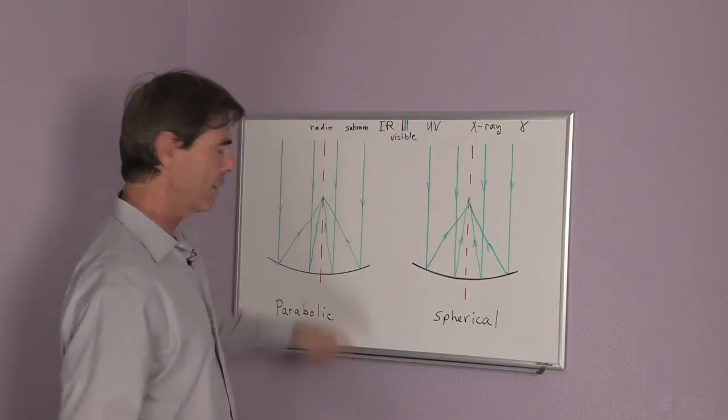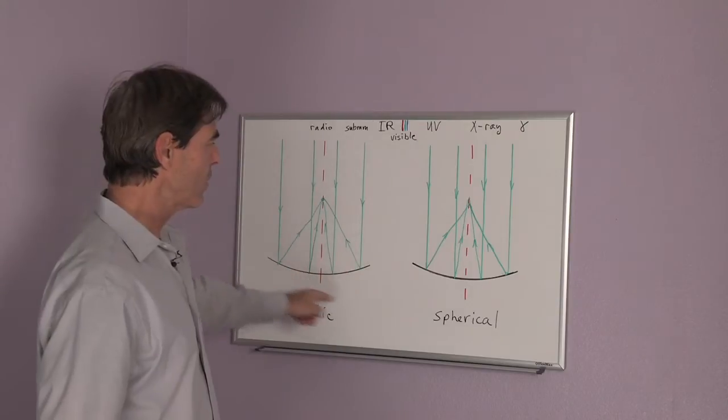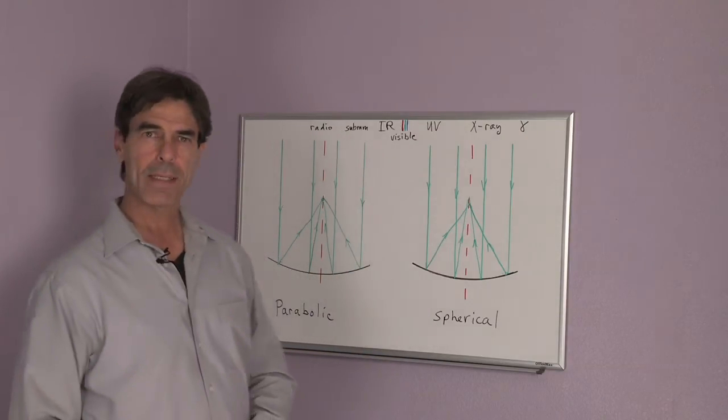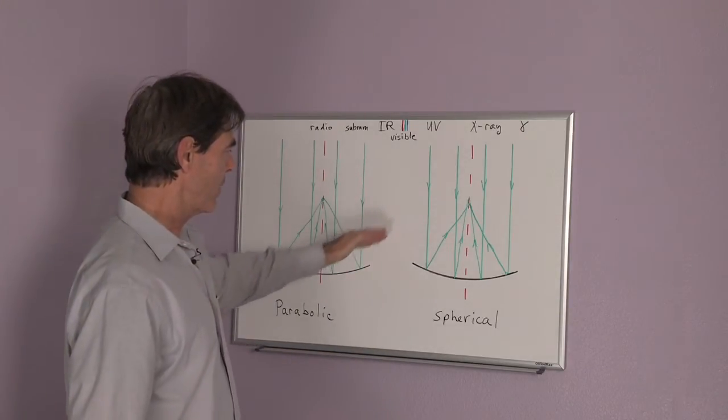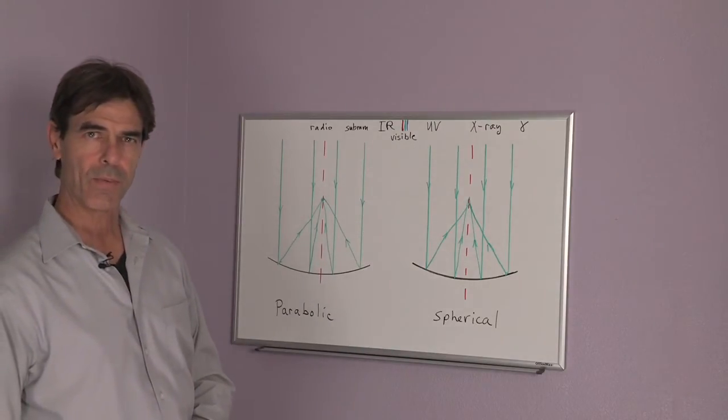A parabolic mirror, on the other hand, for short distances looks like a spherical mirror, but the edges will resemble more of a parabola, which is a different geometric form.